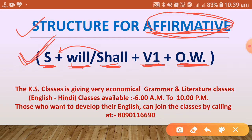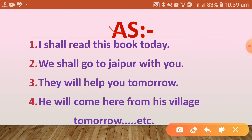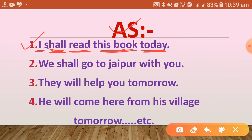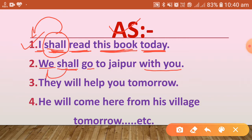Let us see examples of affirmative sentences. Number one: 'I shall read this book today.' Here 'I' is the subject, 'shall' is the helping verb, 'read' is the first form, and 'this book today' are other words. 'Shall' is used because the subject is 'I.' Next: 'We shall go to Jaipur with you' — 'shall' is used because the subject is 'we.'